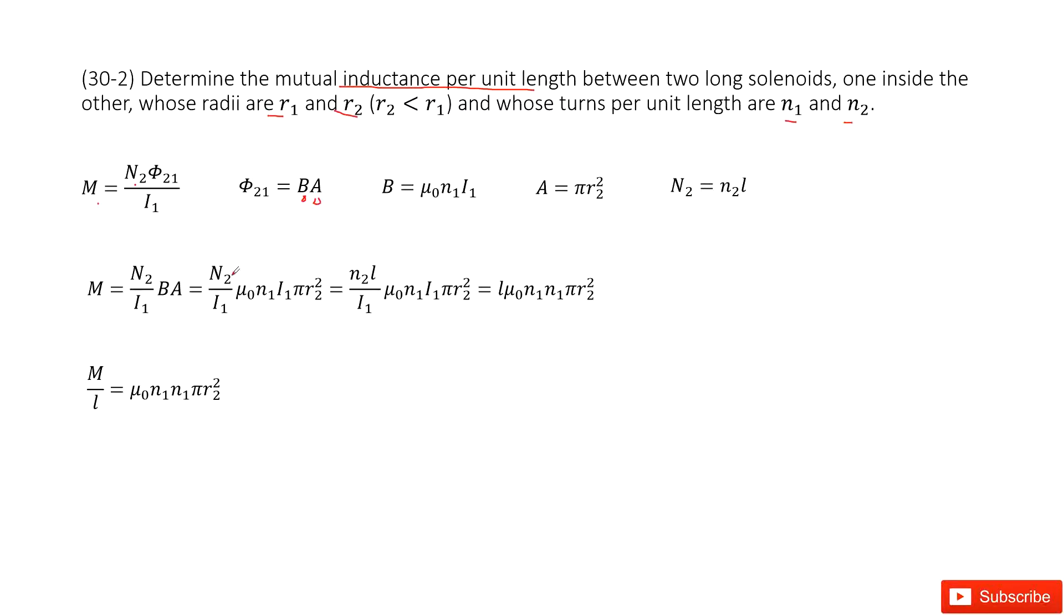Now you can see we input B and A inside. This is B, this is A, and then we need to replace N2 as N2L. Now you can see I and I can cancel.